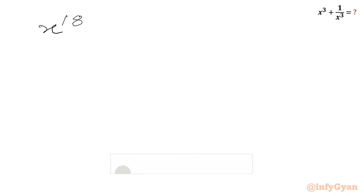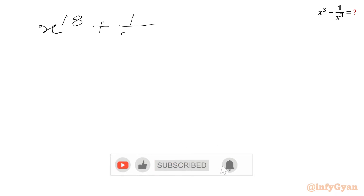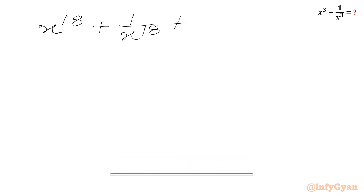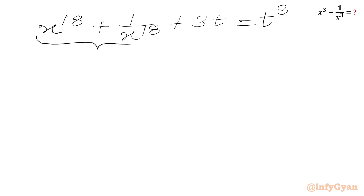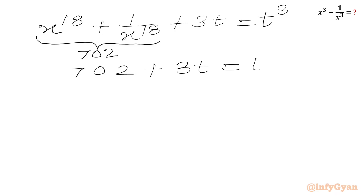Our equation is x power 18 plus 1 over x power 18 plus 3t equal to t cube. Since x power 18 plus 1 over x power 18 equals 702 as given in the problem, I can write 702 plus 3t equal to t cube. Taking all terms to the RHS gives us the cubic: t cube minus 3t minus 702 equal to 0.